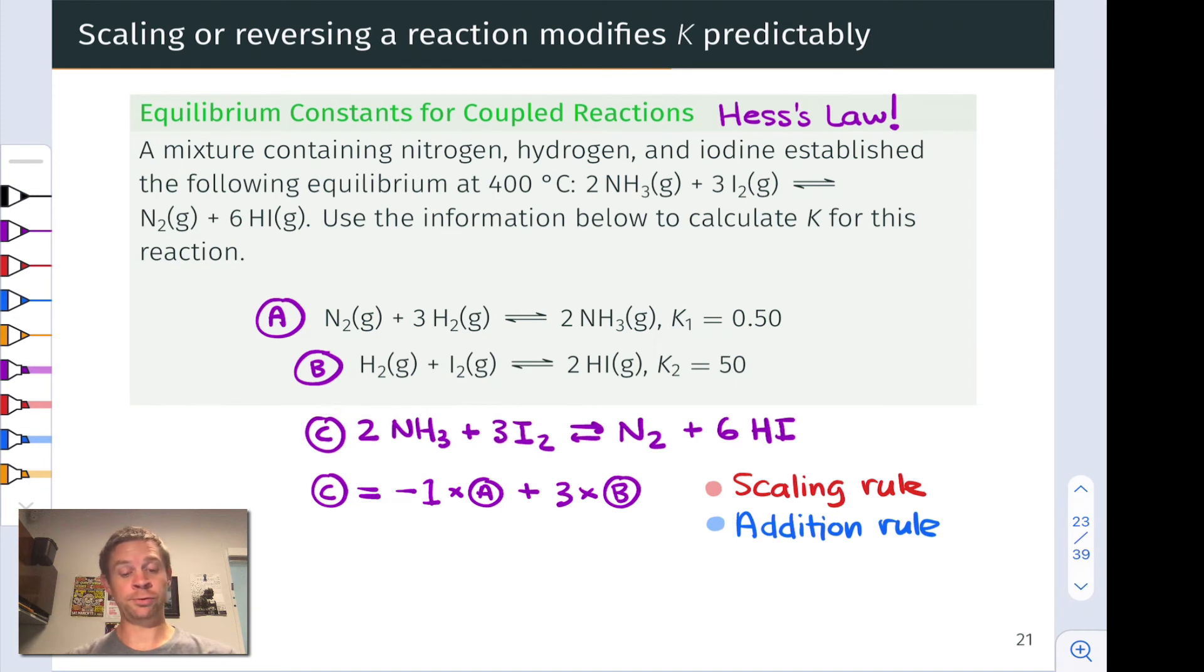So as it turns out, reaction C is the reverse of reaction A plus three times reaction B. And we can see that, for example, if we notice that reaction C has two NH3s on the reactant side. And reaction A has those two NH3s on the product side. So we've got to reverse or flip reaction A. And we've got to scale reaction B by three because we need three moles of I2, for example, on the reactant side in the target reaction C.